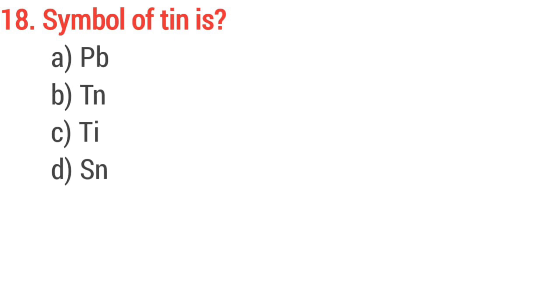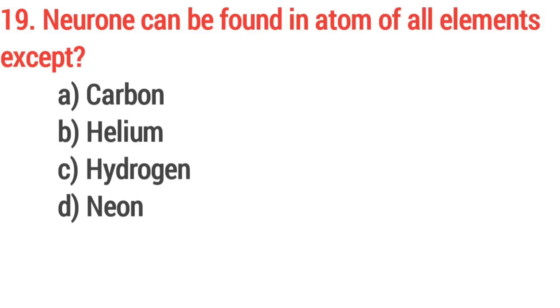Question number 18, symbol of tin. Question number 18, the neurone can be found in atom of all elements except? Answer option C, hydrogen.